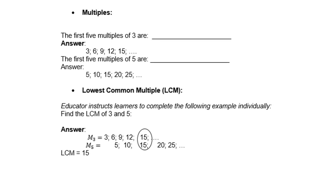Multiples: the first 5 multiples of 3 are 3, 6, 9, 12, 15. So multiples mean you must add 3 each time. The first 5 multiples of 5 are 5, 10, 15, 20, 25.